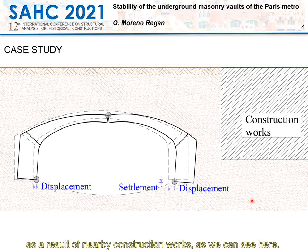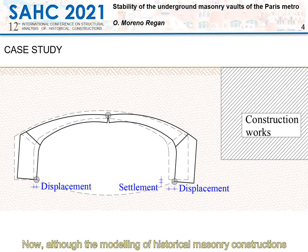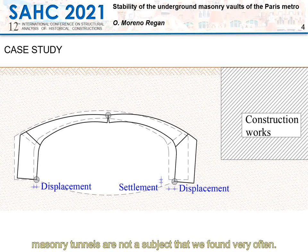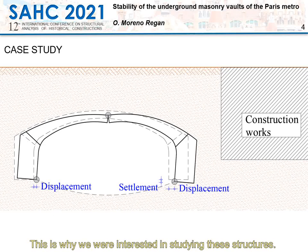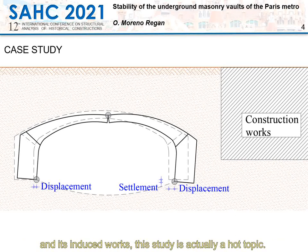The main case study here is the spreading of the vault supports as a result of nearby construction works. The overall idea is to reproduce the behavior using a numerical model. Although the modeling of historical masonry construction has been the subject of many scientific papers, masonry tunnels are not a subject found very often, which is why we were interested in studying these structures.